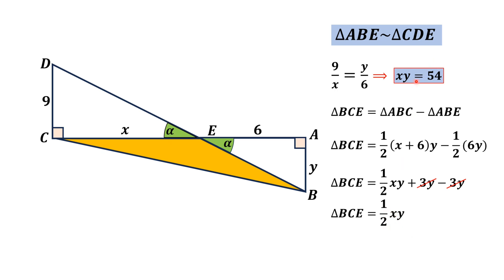Substituting the value of XY from here, we get 1/2 times 54, and that is 27 square units, which is the answer. Thank you for watching.